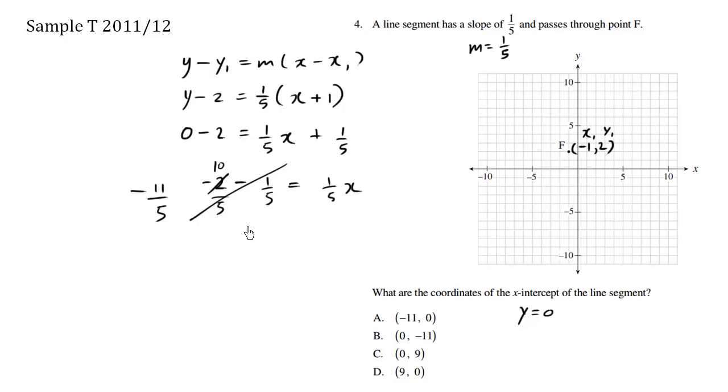Let's multiply both sides by 5. So we get negative 11 equals x. When we multiply by 5, it cancels out. So we have x equals negative 11.